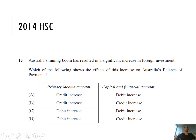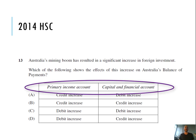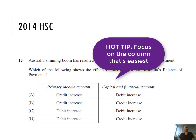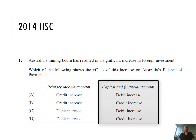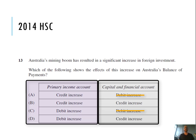Question 13 from the 2014 HSC: Australia's mining boom has resulted in a significant increase in foreign investment — which of the following shows the effects of this increase on Australia's balance of payments? When I get this type of question I focus on the column that's easiest. Because it's Australia's mining boom, there will be a credit on the capital and financial account, so A and C are not an option.